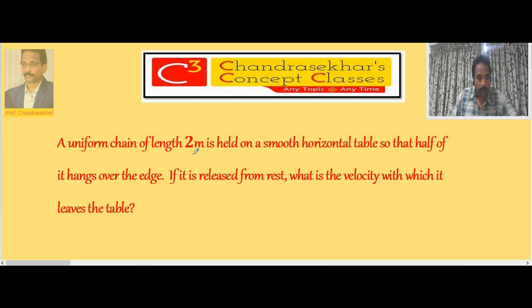Here the chain is placed on the table, 2 meter length. Initial case: half of it is hanging. When you release it, the total chain falls down, so we want to calculate the velocity with which it leaves the table.